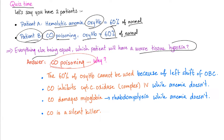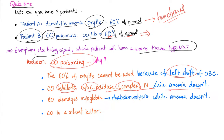Why is CO poisoning worse? Although it's 60% of normal in hemolytic anemia, that 60% is functional — less than normal, but at least it works. In CO poisoning, there is a left shift: the carbon monoxide on hemoglobin doesn't let any oxygen be released into the tissue. Also, carbon monoxide inhibits cytochrome C oxidase complex IV in the mitochondria, making it a cellular respiration poison, while hemolytic anemia is not. Carbon monoxide also damages myoglobin, leading to atraumatic rhabdomyolysis, while anemia does not.